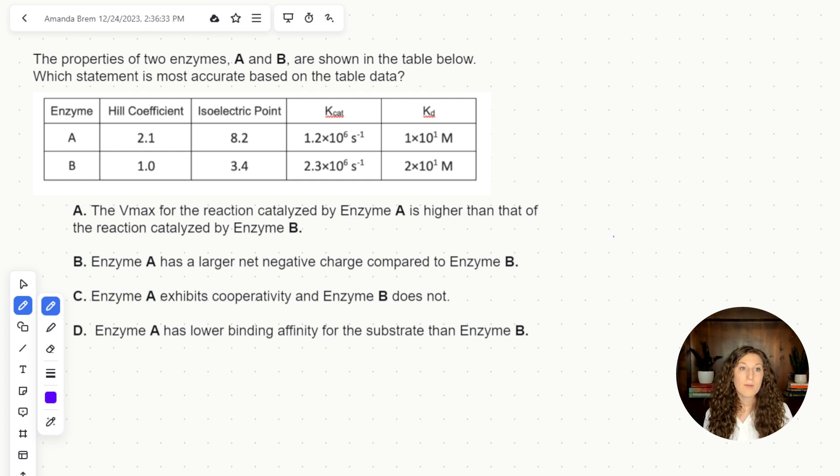So I'm going to look at hill coefficient. Remember hill coefficient is telling us about cooperativity. And a hill's coefficient of greater than one means cooperativity. That means that we have multiple binding sites and as one ligand binds or one substrate binds, it actually increases the binding affinity for the remaining sites. So we can see that enzyme A has cooperativity. But enzyme B, which equals one, has no cooperativity. So that's a quick identifier that we can look for here.